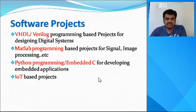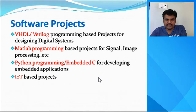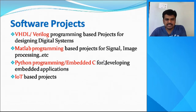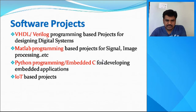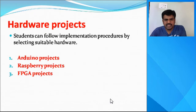What are software projects? Projects related to digital system designing need VHDL and Verilog programming. Projects related to construction of VLSI circuits need some SPICE tools — this is also a software project. Projects related to signal processing, image processing, or graph signal processing are related to MATLAB programming. Developing embedded applications based on Python or embedded C, or developing projects based on IoT, are also software projects. These are the different types of software projects students can do in their mini project or main project.